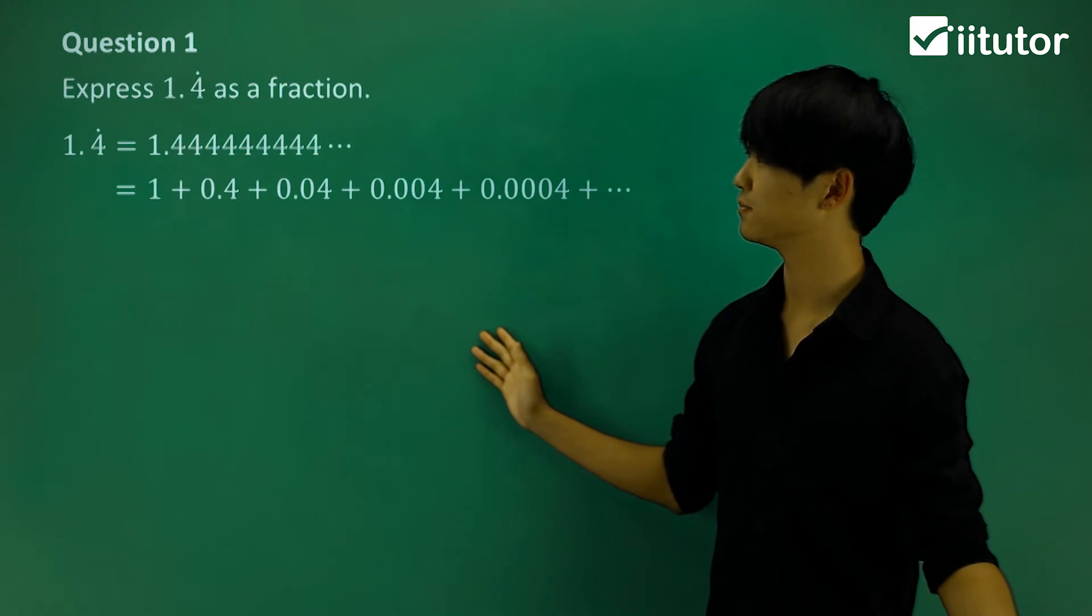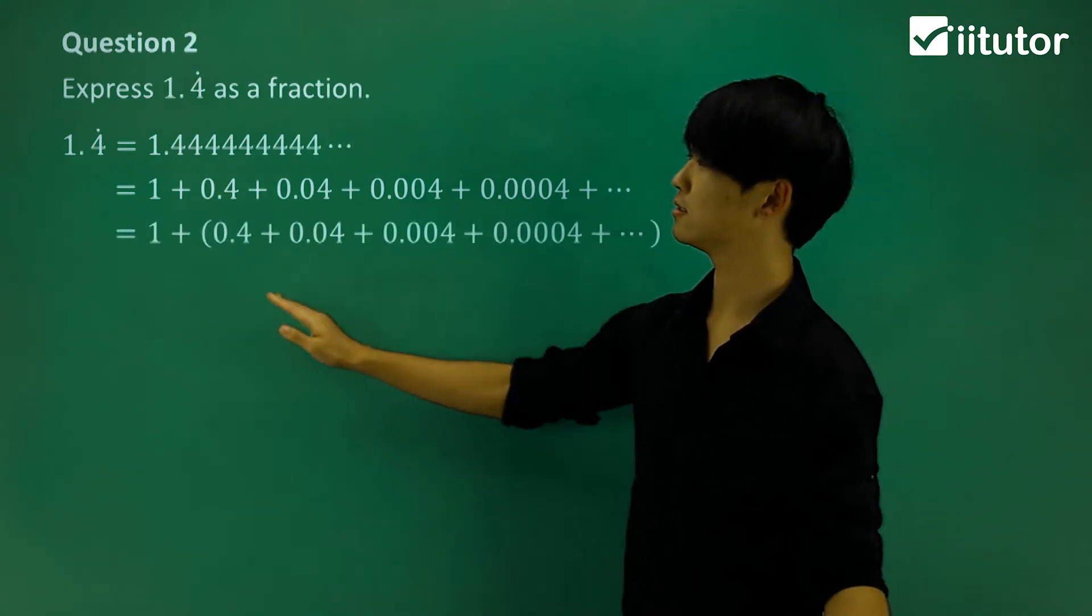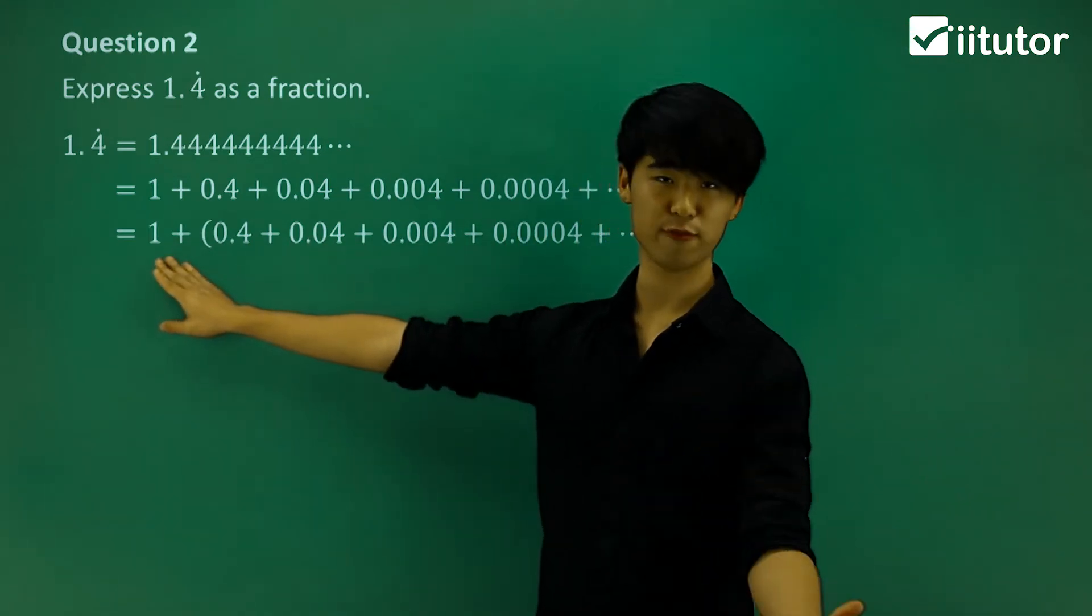So how am I going to do that? I'm going to say that 1.4 recurring is the same thing as 1 plus 0.4 plus 0.04 and so on, until we get this recurring thing which looks like a geometric series. So we have to try and write it like this. We can see that only this portion is in geometric series. That 1 is just an extra value.